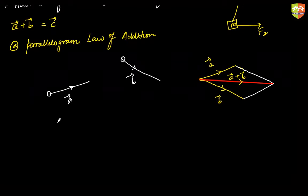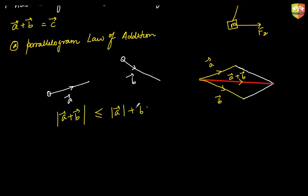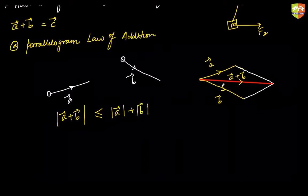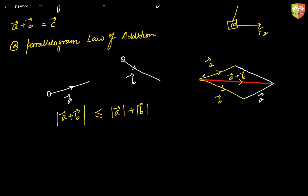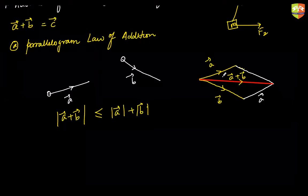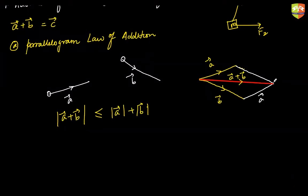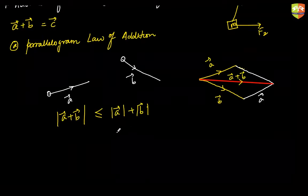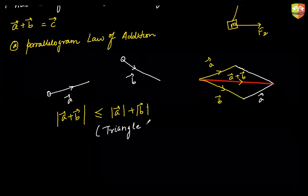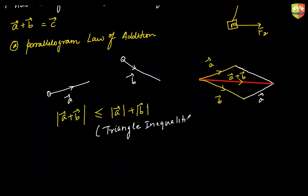The magnitude of A plus B will always be less than or equal to the sum of the individual magnitudes of A and B. This is because the magnitude of A plus B is the length of the third side of a triangle, which is always less than the sum of the other two sides. This is called the triangle inequality.